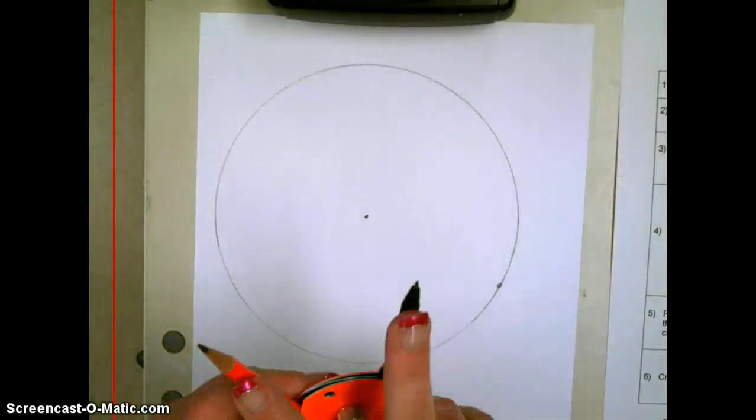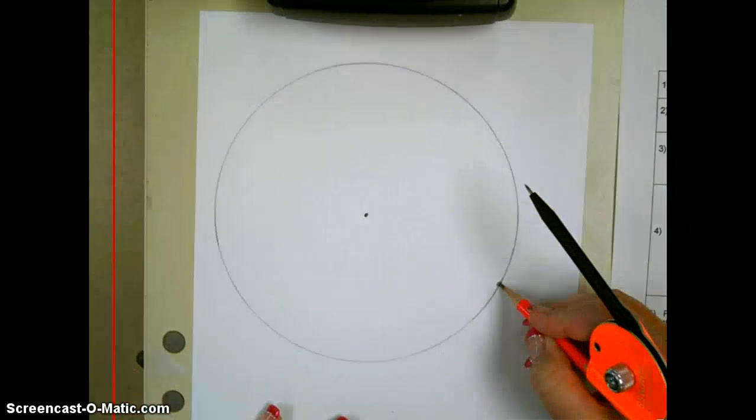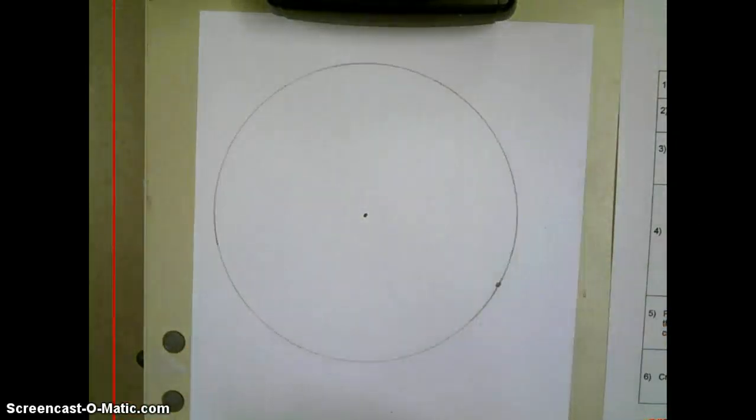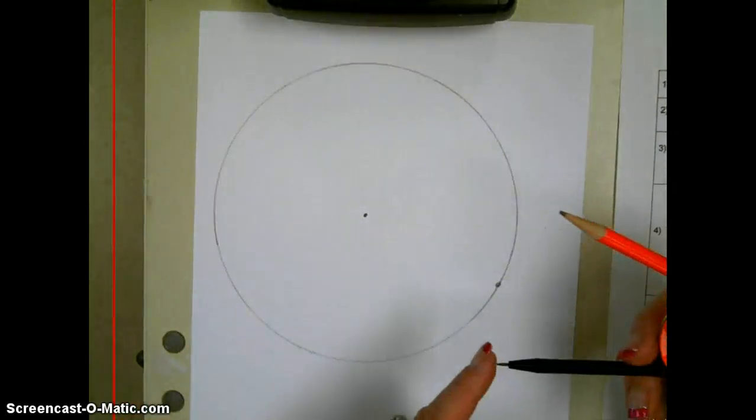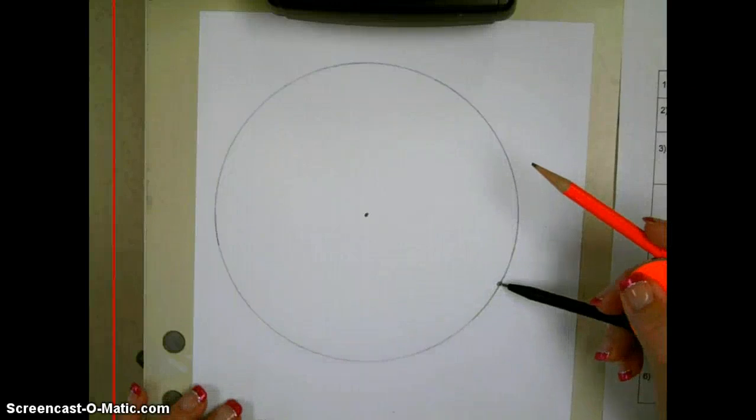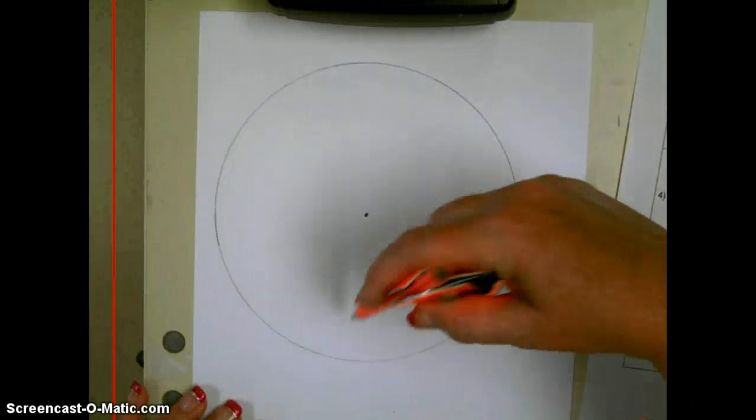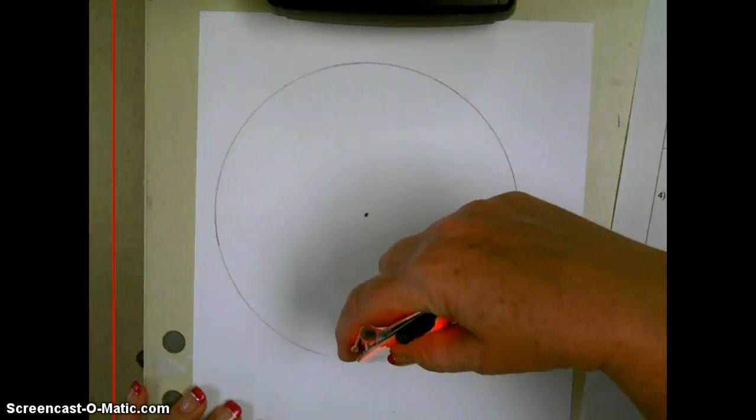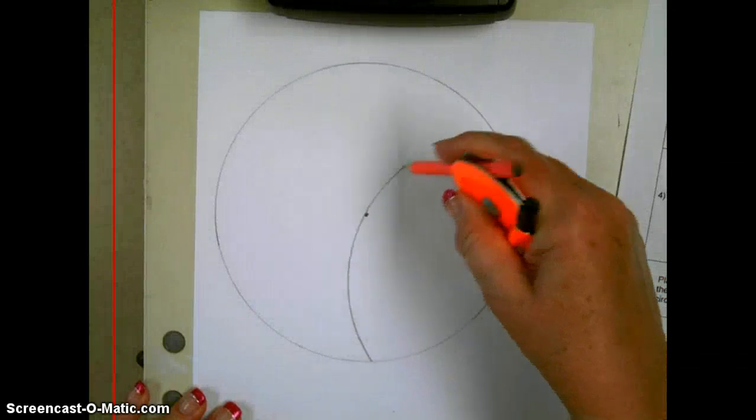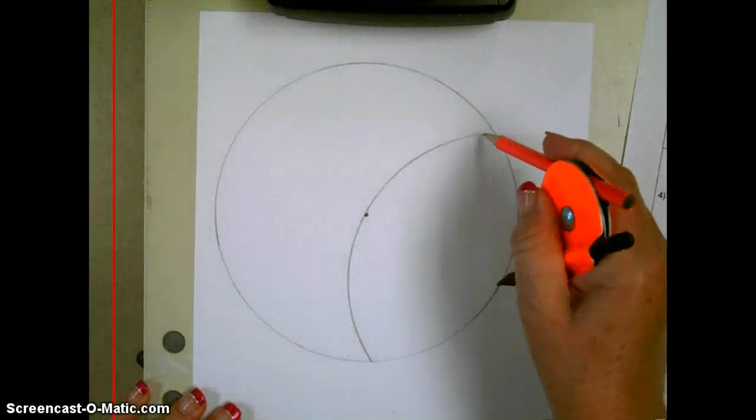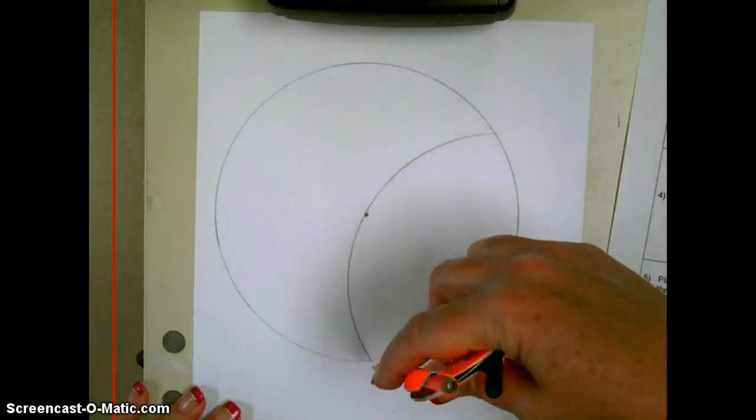So using that same radius, and having made a random point over here, I'm going to put the point of my compass on my random point, and I'm going to create an arc that goes from the circle to another part of the circle. Notice my arc went right through the center of the circle.